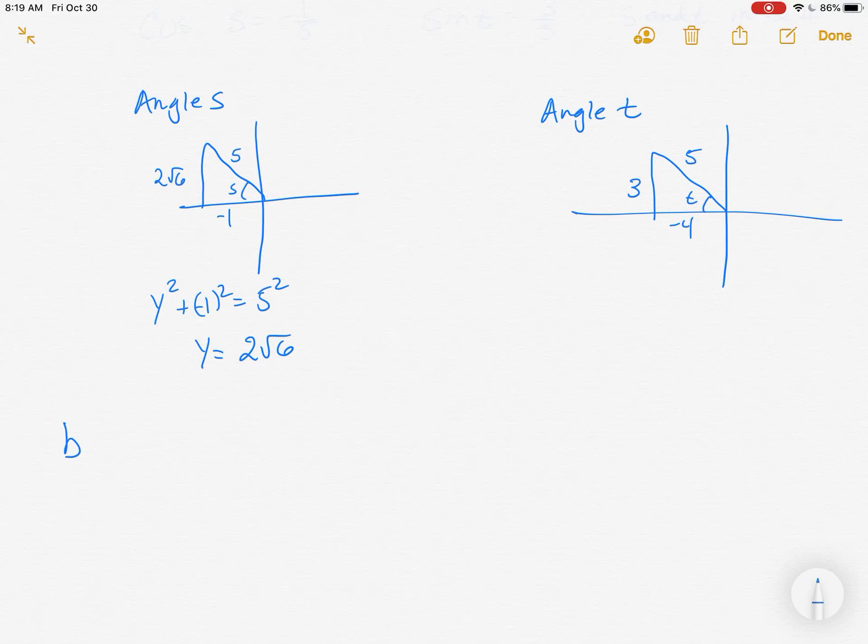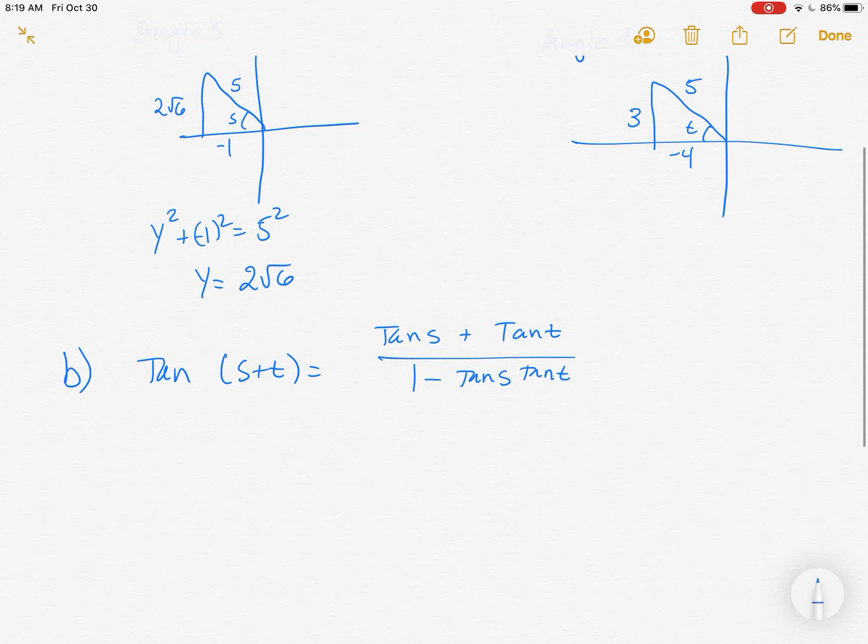So the question in part B is the tangent of S plus T, which is by definition or by identity tangent of S plus tangent of T all over 1 minus tan S tan T. So we just plug in tangent of S,